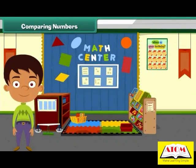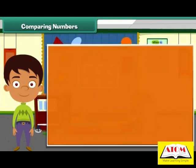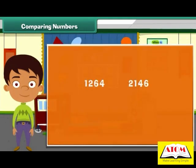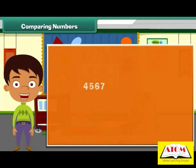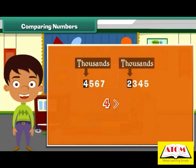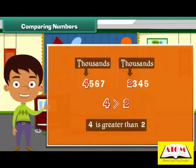Comparing numbers. Let us now learn to compare numbers. To compare two four-digit numbers, we first compare the digits at the thousands place. The number that has a greater digit at the thousands place is the larger of the two. For example, let us compare 4,567 and 2,345. Since 4 is greater than 2, we can say that 4,567 is larger.